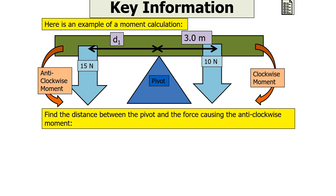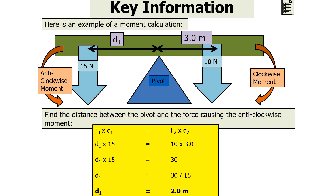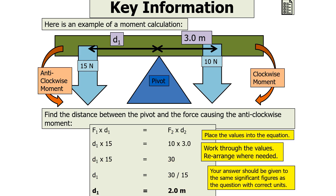Here is another example: find the distance between the pivot and the force causing the anticlockwise moment. We can say force 1 times by distance 1 equals force 2 times by distance 2. So distance 1 times 15 equals 10 times 3. Distance 1 equals 30 over 15, so distance 1 equals 2 metres. Place the values into the equation, work through and rearrange where needed, and give your answer to the same number of significant figures with the correct units.